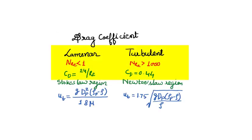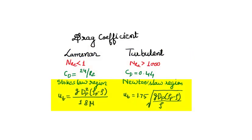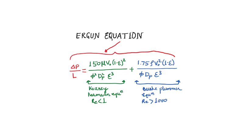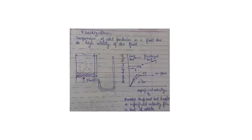To summarize flow past immersed bodies: study drag coefficient for laminar and turbulent flow, terminal settling velocity in Stokes' law and Newton's law regions with their formulas, the Ergun equation, and the fluidization curve. This covers all of flow past immersed bodies.